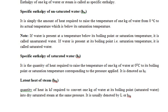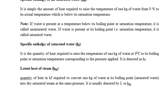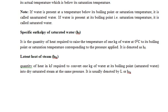If the water is present at a temperature below the boiling point (saturation temperature), it is called unsaturated water. The specific enthalpy of saturated water is the heat required to raise the temperature of one kilogram of water from zero degrees Celsius to its boiling point corresponding to the applied pressure, given by hf. The latent heat of steam, denoted hfg, is the quantity of heat required to convert one kilogram of water at its boiling point into dry saturated steam.